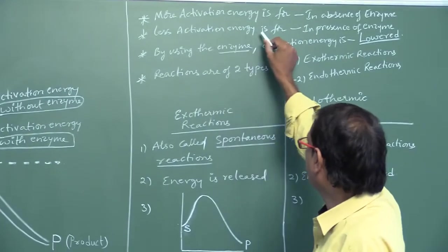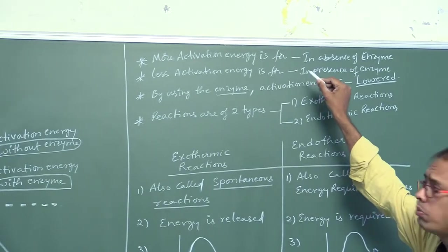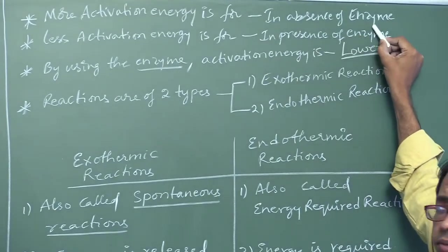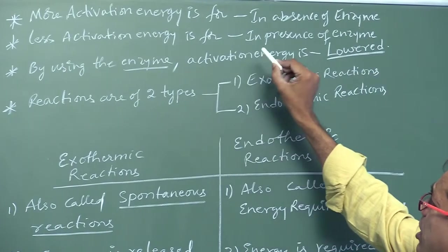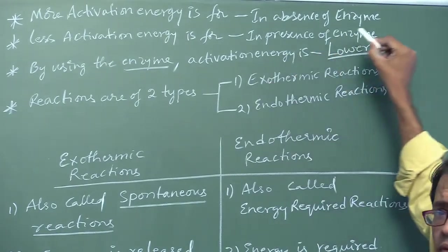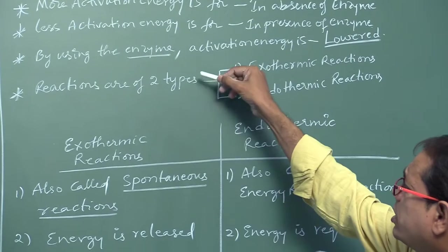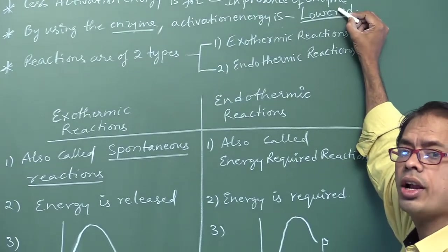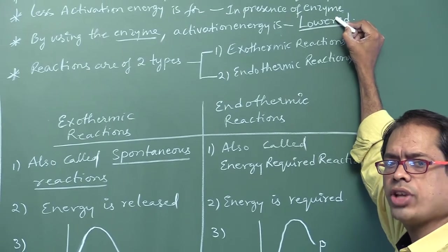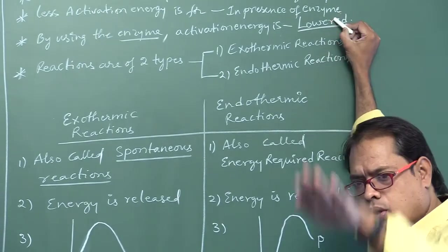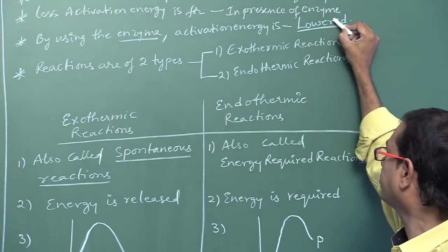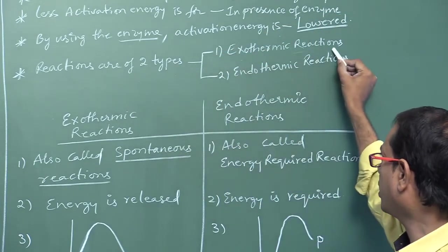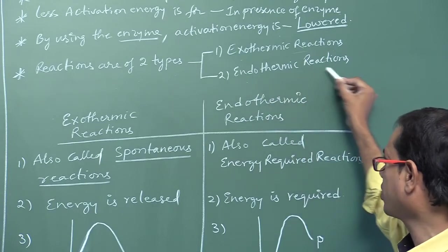In absence of enzyme, more activation energy is present. In presence of enzyme, less activation energy is required. By using the enzyme, activation energy is lowered or decreased. We use the enzyme in chemical reactions to lower the activation energy. Reactions are of two types: exothermic reactions and endothermic reactions.